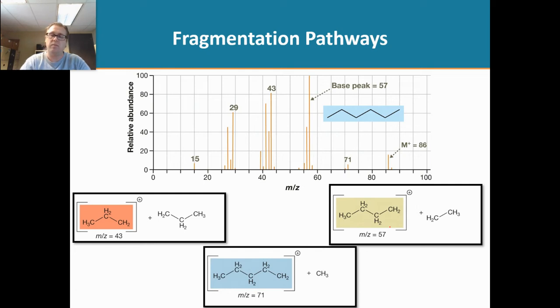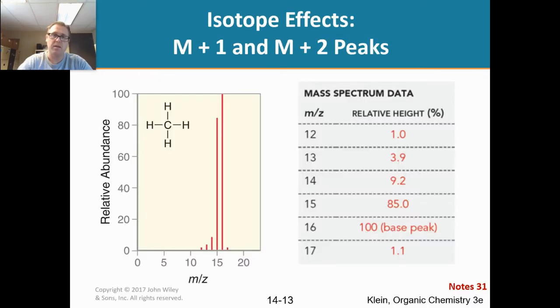In the last video, I talked about hexane and the molecular ion peak and all the fragments and the base peak. I briefly mentioned this peak right there, that small one, and that's called the M plus 1 peak. So that's what we want to discuss today, what is that peak, this M plus 1.